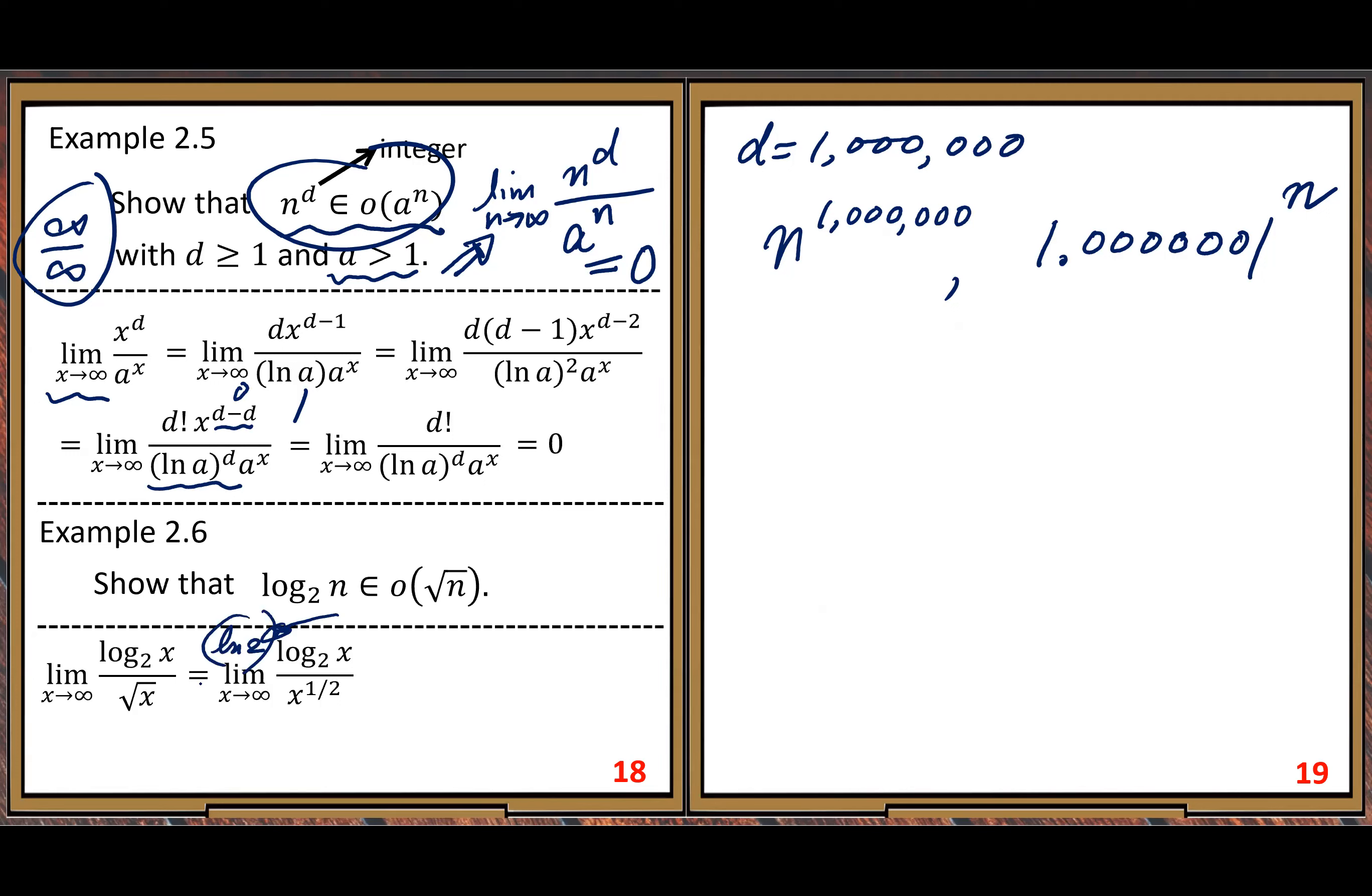So here I missed that part. Natural log of 2, we know it's a positive number, greater than 0, but it's a constant. It's a constant, positive constant.